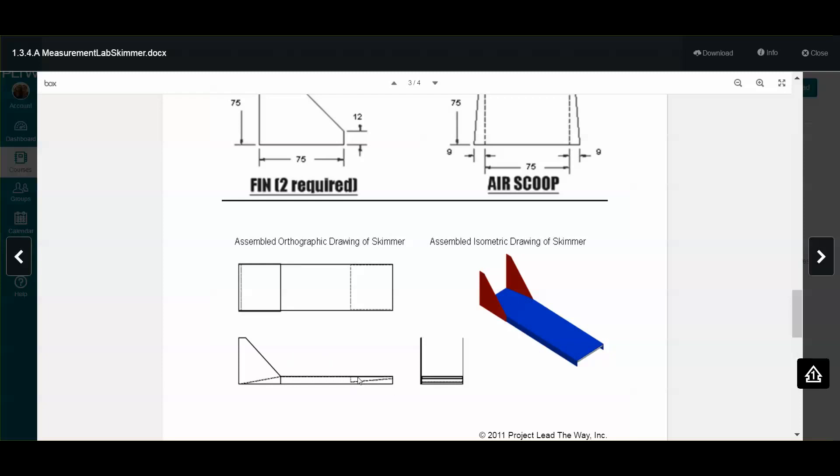Use these hidden lines here to help you locate the air scoop, which is underneath the front. You have some resources here to help you build the skimmer. Please use them to your advantage before coming to ask for help.